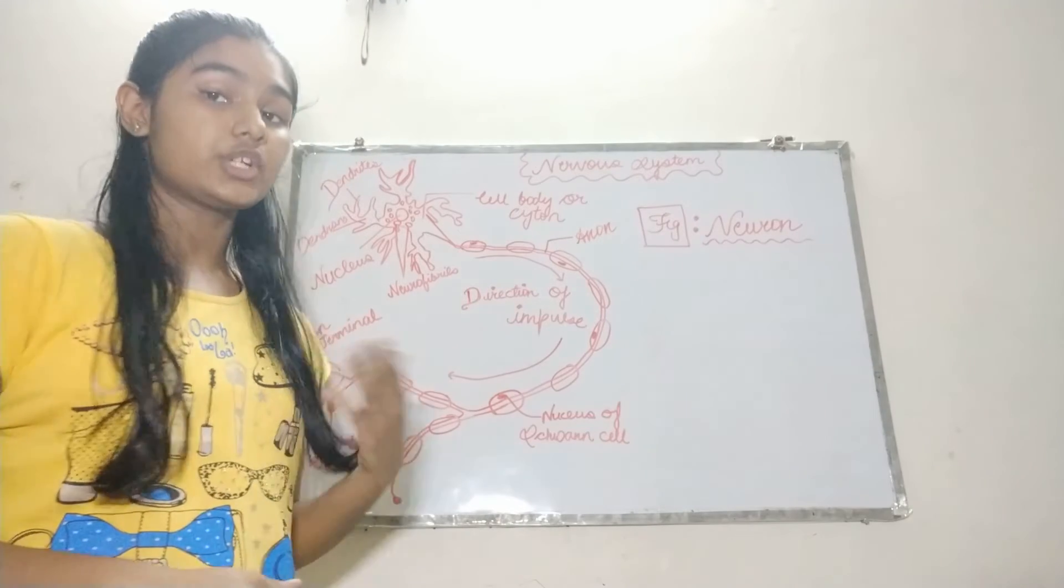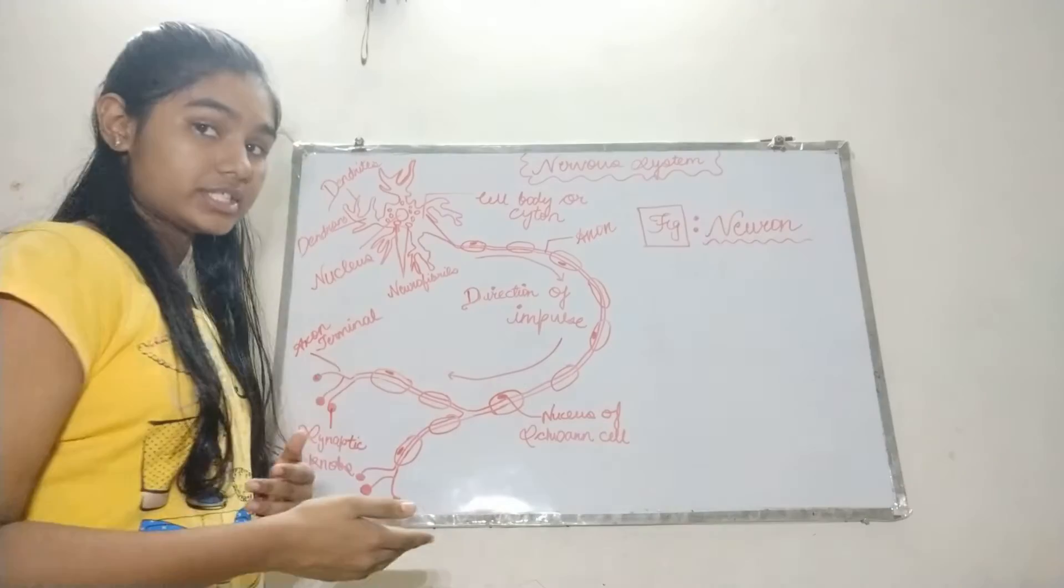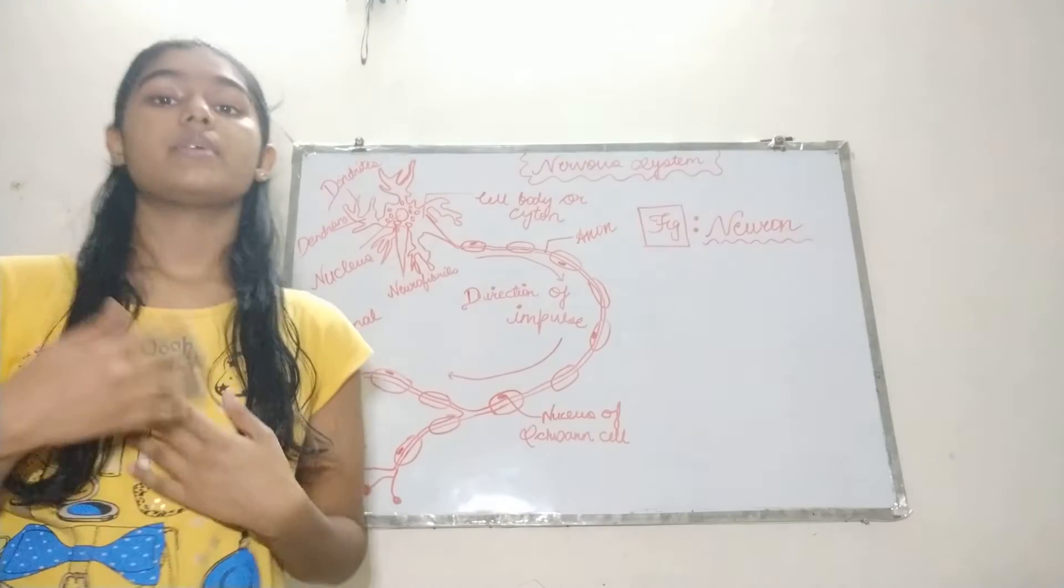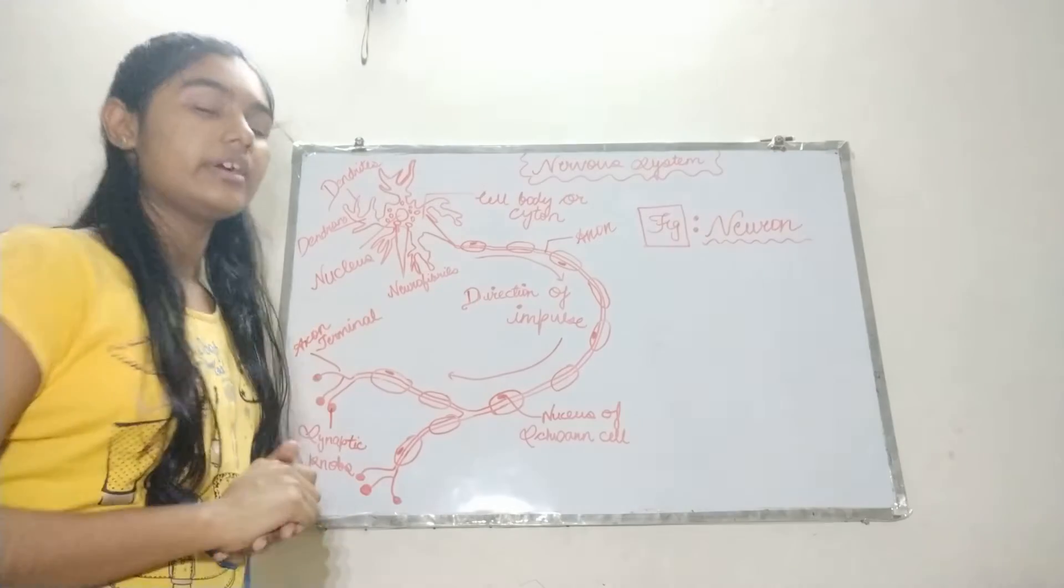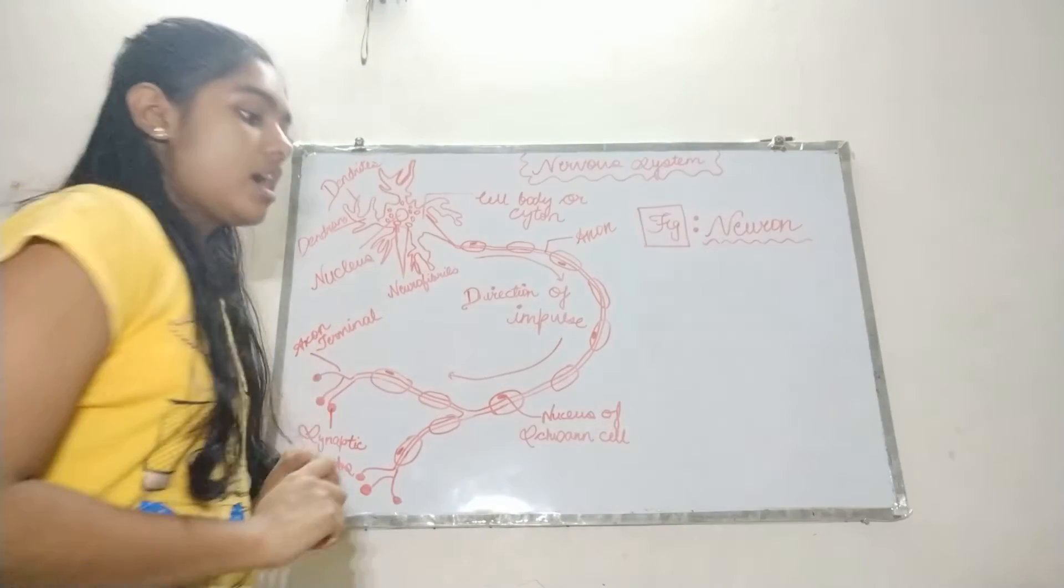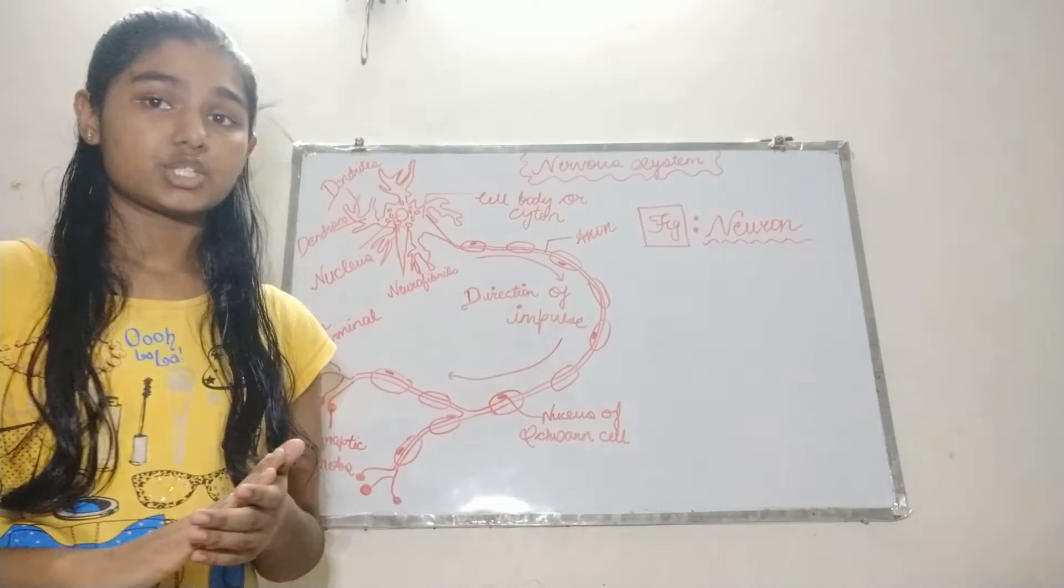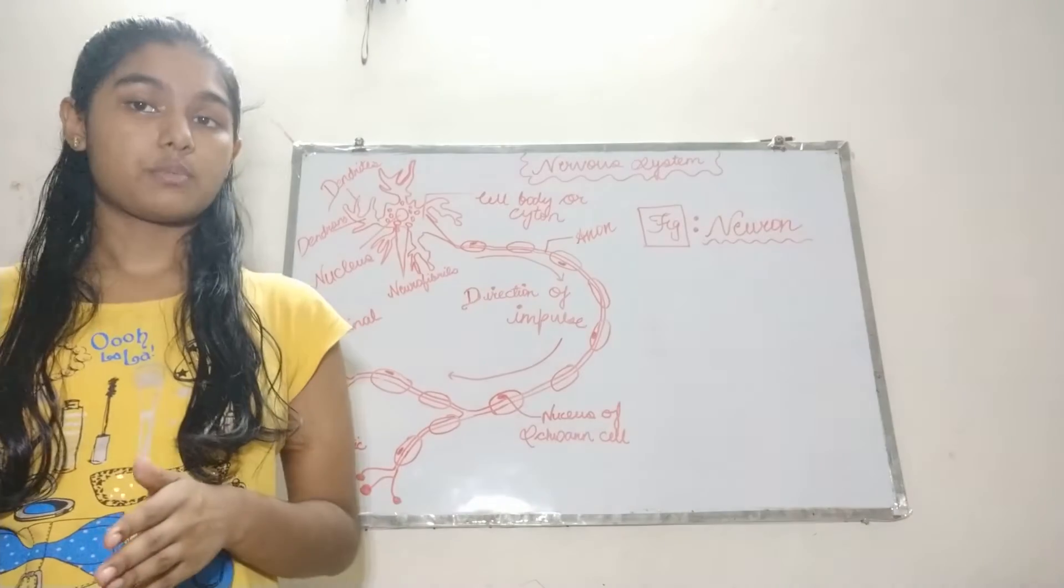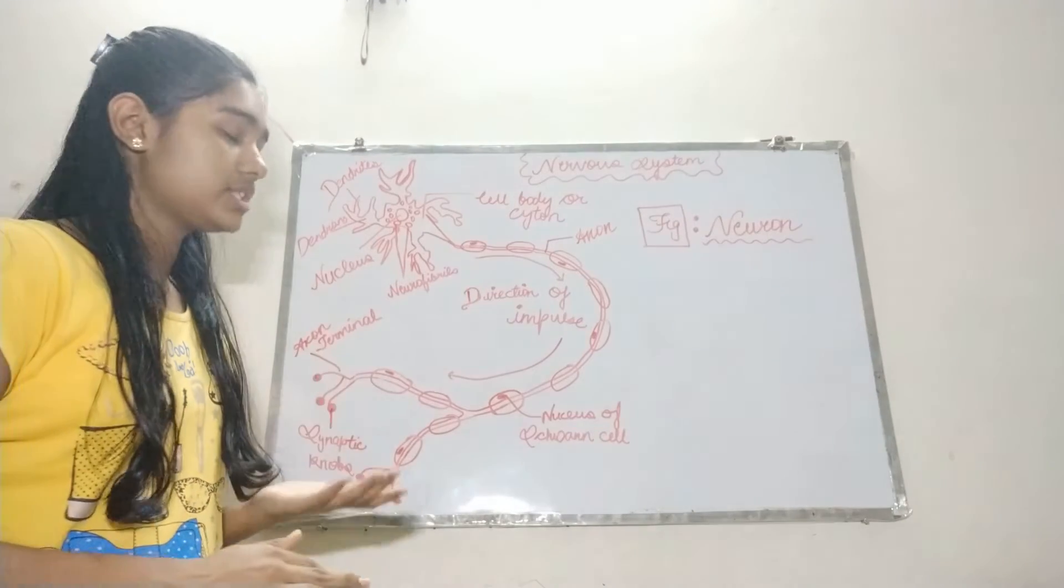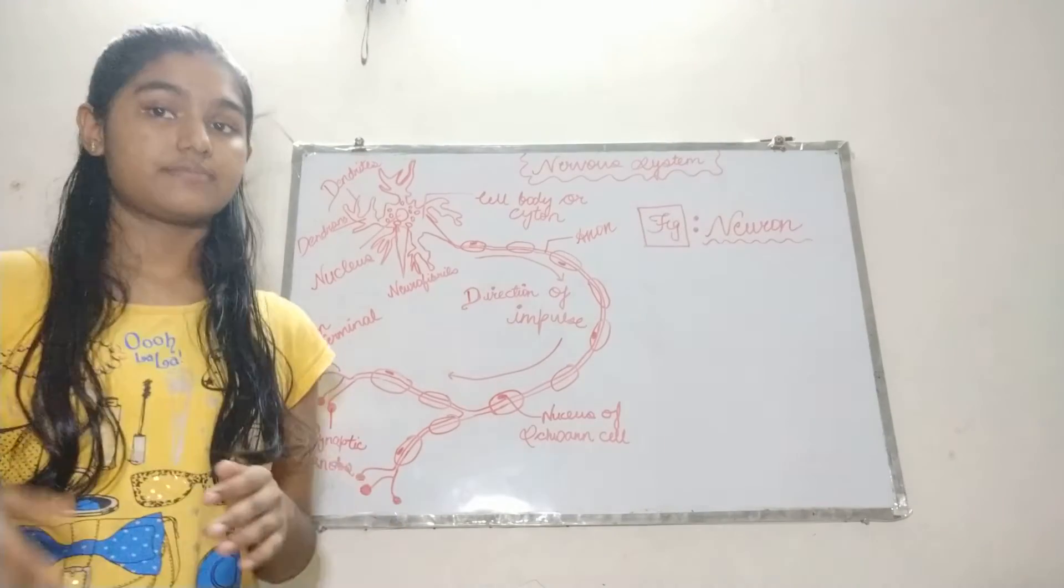There are mainly two types of controlling systems in our body. One is the rapid controlling system, which is our nervous system, and the second one is the slow controlling system, which is our endocrine system. Our endocrine system consists of glands. There are secretions called hormones. And the nervous system consists of these organs, nerves, etc.